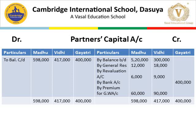From the revaluation account there was a profit, so Rs. 6,000 and Rs. 9,000 are credited to Madhu and Vidhi's capital accounts respectively. Incoming partner Gayathri brought capital and premium for goodwill in cash — by bank, Gayathri's capital is Rs. 4,00,000. Premium for goodwill: Rs. 60,000 and Rs. 90,000 given to Madhu and Vidhi respectively in their old sacrificing ratio.